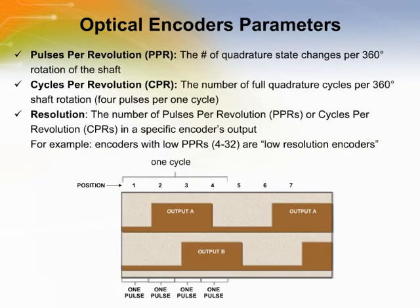Specific encoders can be specified in terms of pulses per revolution, or PPRs, of the output signal. This is the number of quadrature state changes per 360-degree rotation of the code rotor. Encoders can alternately be specified in terms of their cycles per revolution, or CPRs — the number of full quadrature cycles per 360-degree rotation of the code rotor. Please note that there are four pulses in every cycle.